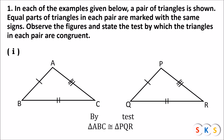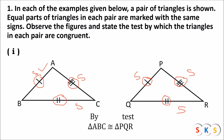Here we have two triangles. Side AB and side PQ got a same kind of mark, therefore side AB is congruent to side PQ. Side BC and side QR got a same kind of mark, therefore side BC is congruent to side QR. Side AC and side PR got a same kind of mark, therefore side AC is congruent to side PR. All three sides of both triangles are congruent, so these two triangles are congruent by SSS test.